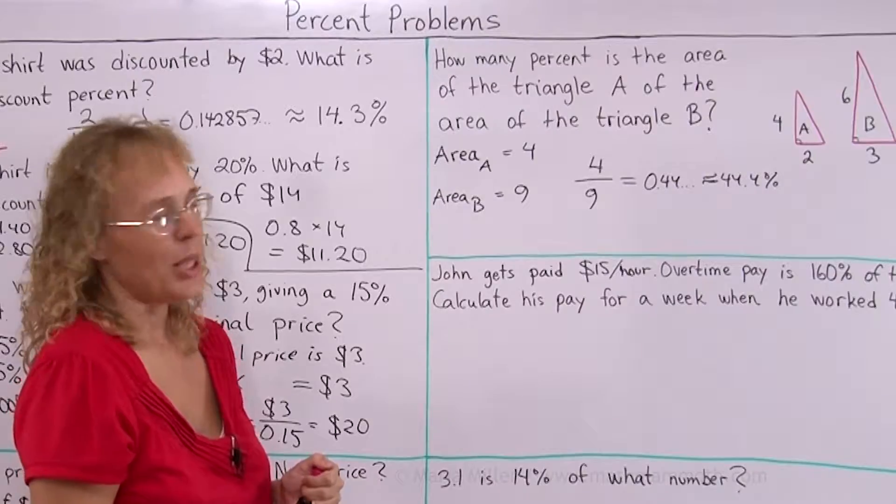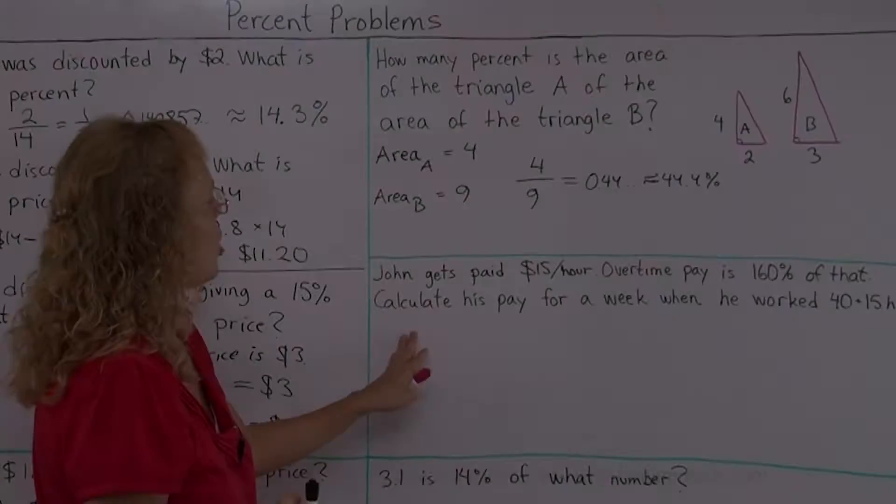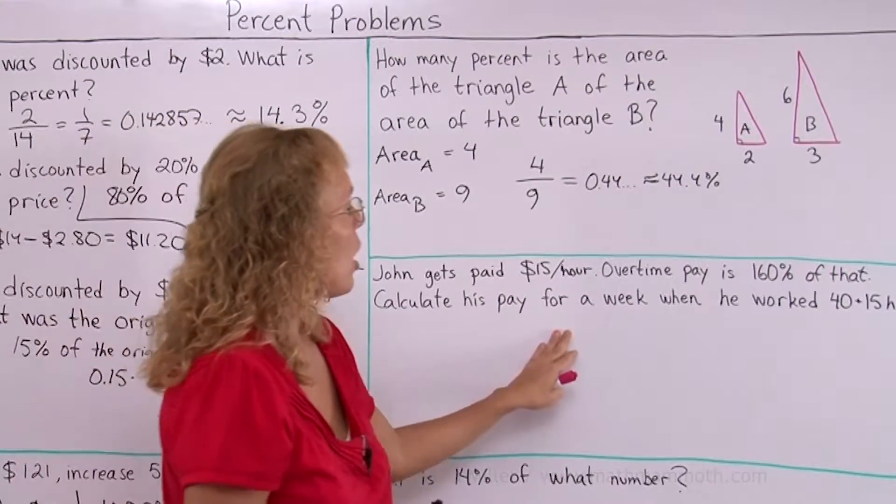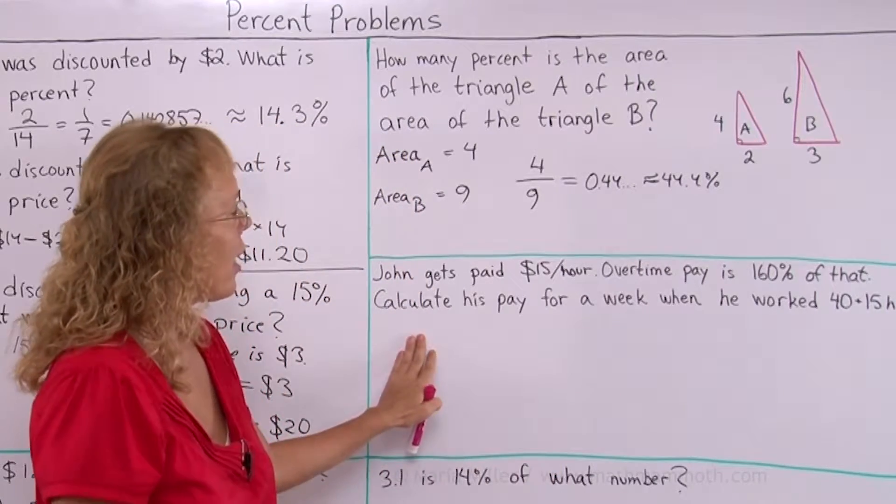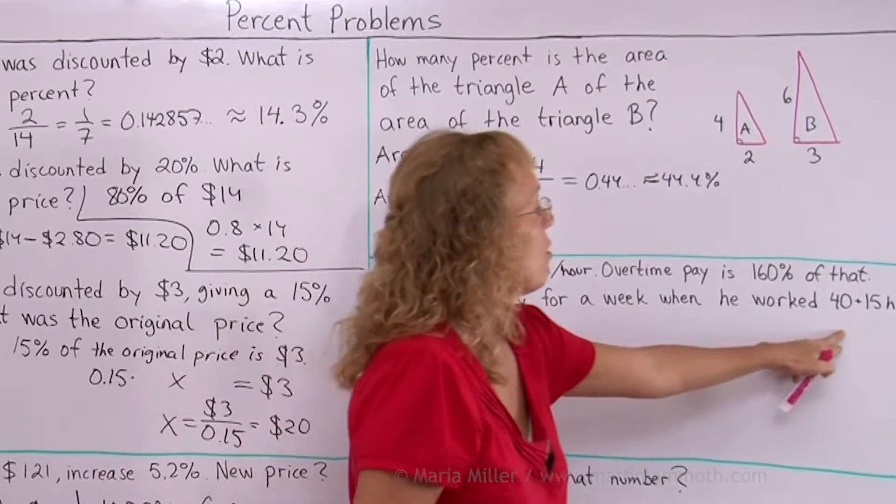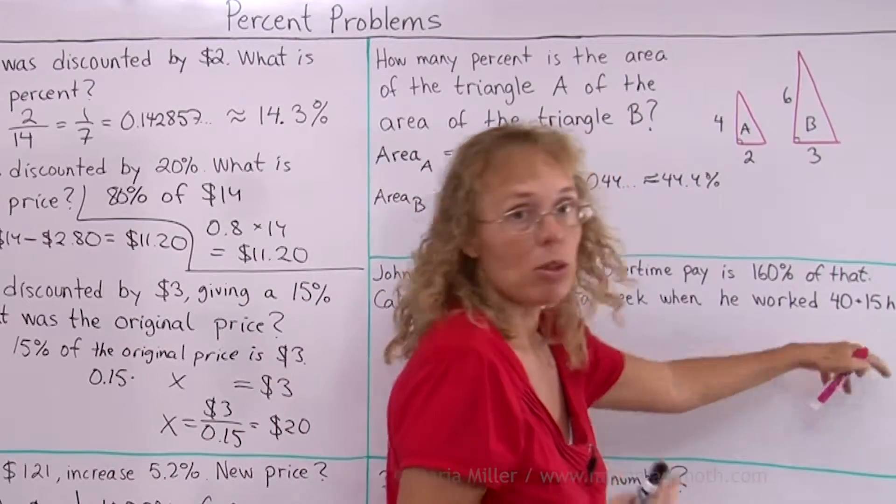So it is not 67%. John gets paid $15 an hour. And overtime pay is 160% of that. Calculate his pay for a week when he worked 40 hours normal hours and then 15 overtime hours.